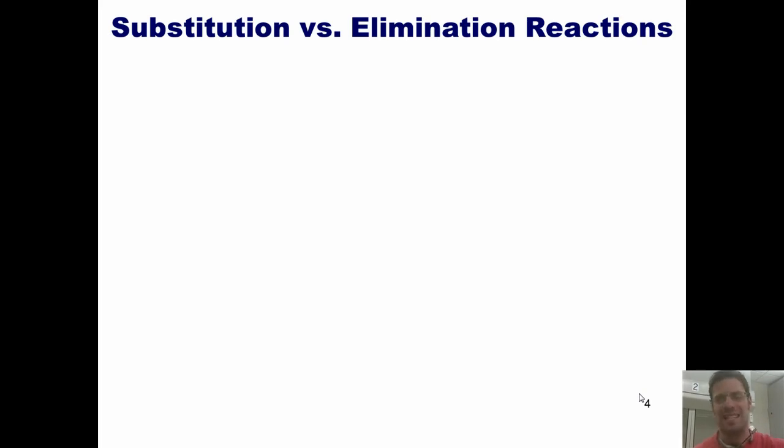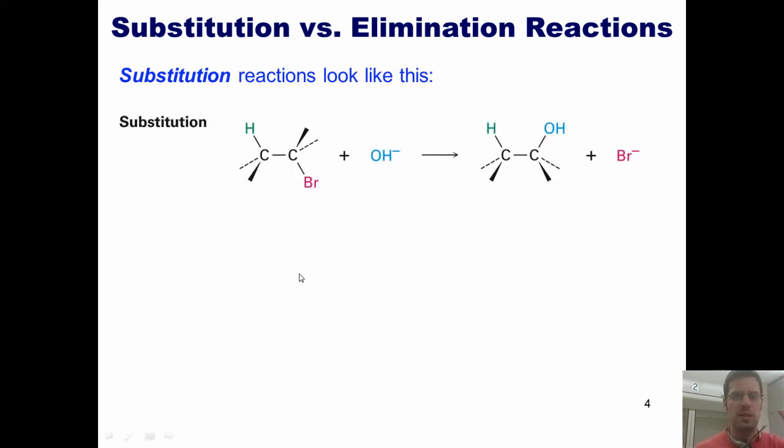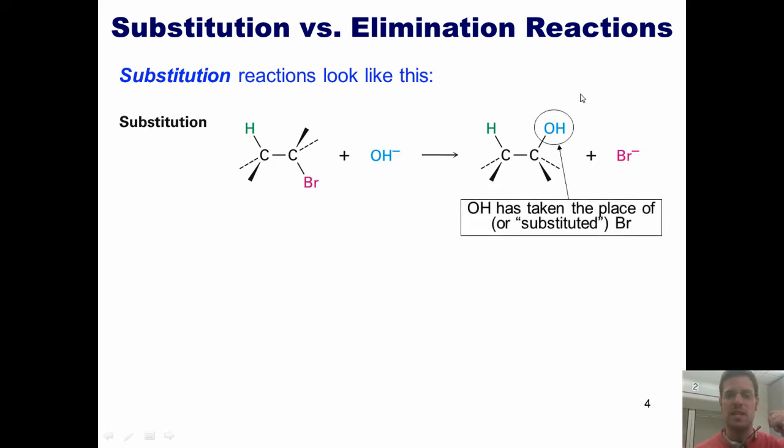As we discussed in our last series of lectures from chapter 8, substitution reactions look like this. There's some kind of leaving group, in this example a bromine, which takes off and then gets replaced by a nucleophile, in this case a hydroxide. Thus we can say that the OH has taken the place of, or substituted itself for, the bromine.